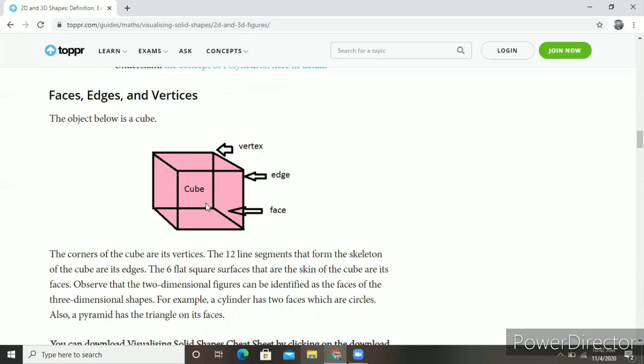Face means the flat surface we see. The cube has 6 faces: one, two, three, four, five, and six. Edge means the line segment where two faces meet. The cube has 12 edges. These are the edges of the cube. The cuboid is the same because cube and cuboid have almost the same face, vertex, and edge.